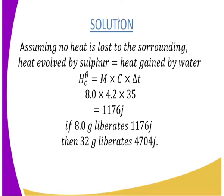Assuming no heat is lost to the surroundings, heat evolved by sulfur equals heat gained by water. We calculate: heat gained = mass × specific heat capacity × temperature change = 8.0 × 4.2 × 35. Computing this gives 1,176 joules. Therefore, 8.0 grams of sulfur liberates 1,176 joules.